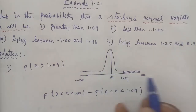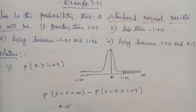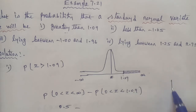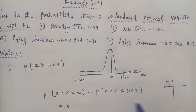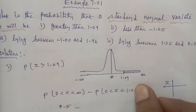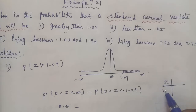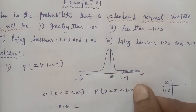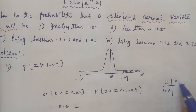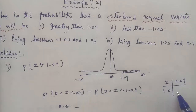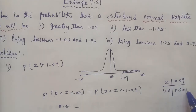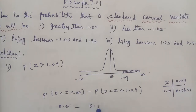The area from 0 to infinity is 0.5. Now we subtract the distribution value from 0 to 1.09. To find P(0 < Z < 1.09), we look up the standard normal table in the textbook's last page. Looking up 1.0 in the row and 0.09 in the column gives us the value 0.3621.